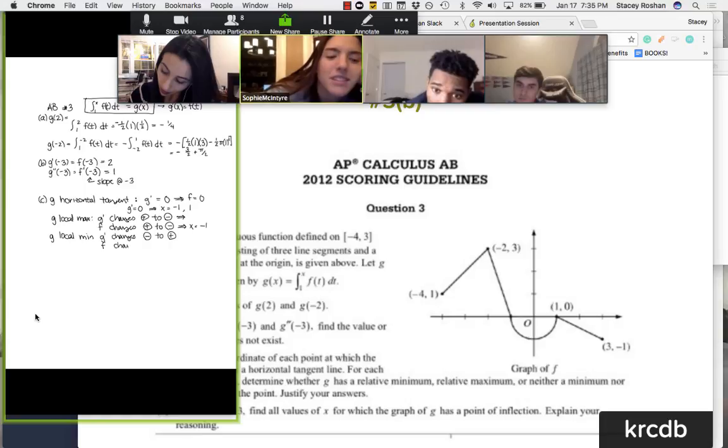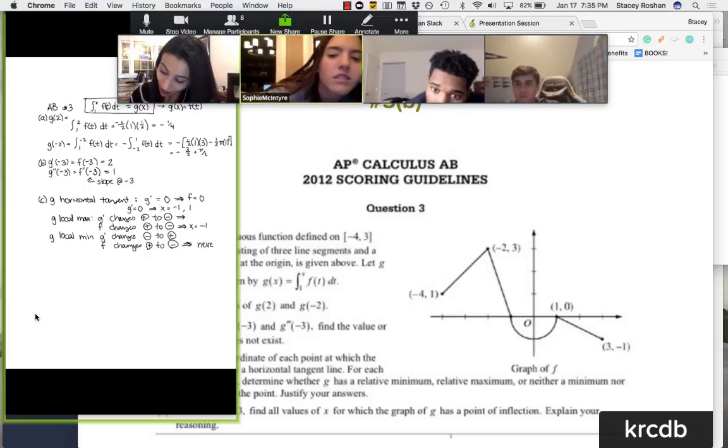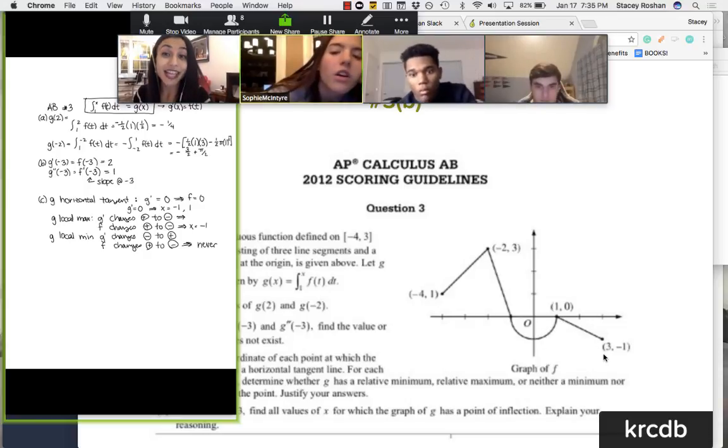X equals 1. No way. It doesn't? Oh, because it's not a line? Never. Because it doesn't actually change sign. It goes negative to negative.